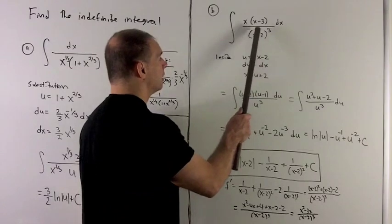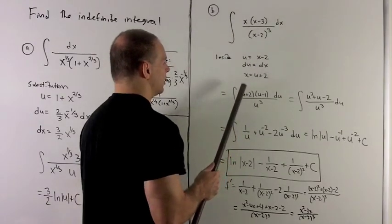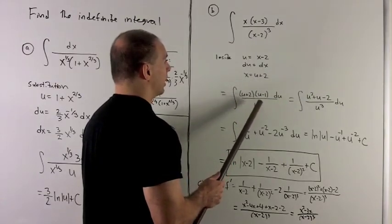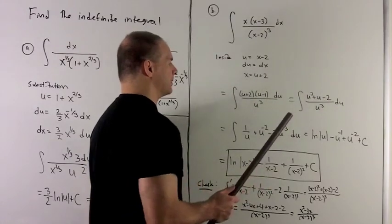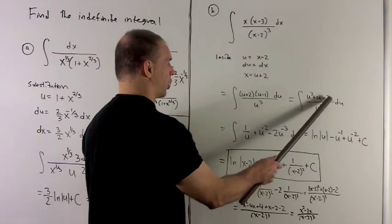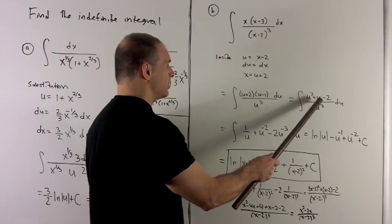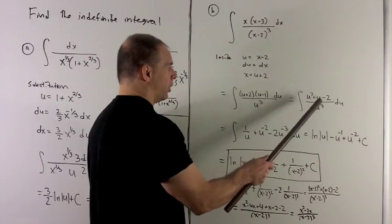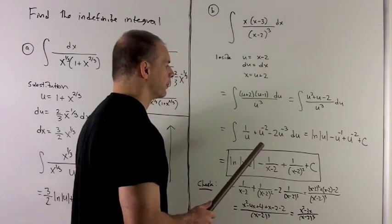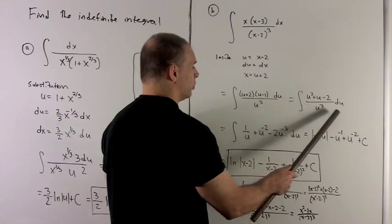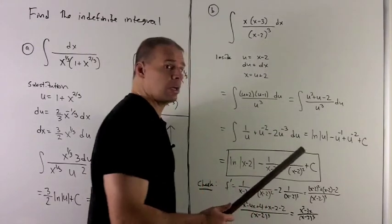I substitute in for the inside, giving me u cubed in the denominator. dx equals du. Then I deal with x and x minus 3: x equals u plus 2, and x minus 3 equals u plus 2 minus 3, or u minus 1. Multiplying those out gives u squared plus u minus 2 in the numerator. Now I divide u cubed into each term: u squared over u cubed gives 1 over u; u over u cubed gives u to the minus 2; and minus 2 over u cubed gives minus 2 times u to the minus 3.